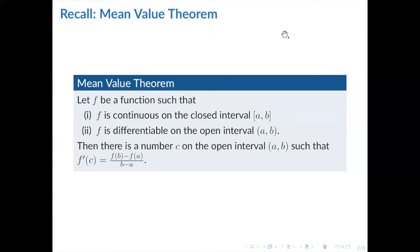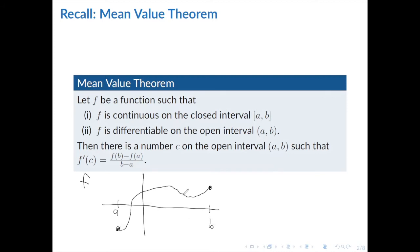The equation looks kind of big and bulky, but this is what it's saying. If you have a function f with some graph, we can interpret the right side as the slope of the secant line connecting the two endpoints — the slope of this line here. The numerator is just the rise as you go from f(a) to f(b), while the denominator is b minus a, which is the run. So rise over run is just the slope of the line connecting the two endpoints.